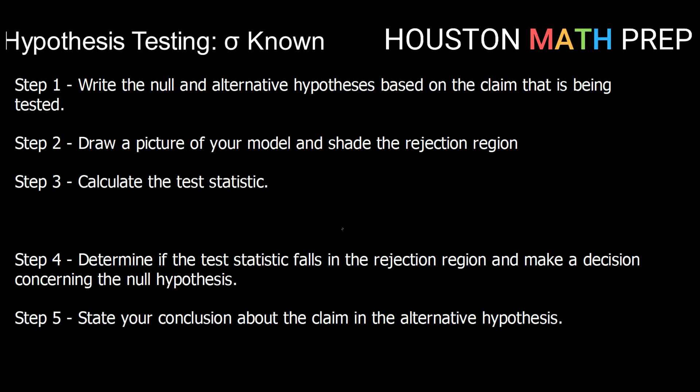So let's review the steps for hypothesis testing in general and fill in the gaps for how we're going to do this for a mean if sigma is known. The first step is always to write a null and alternative hypothesis.